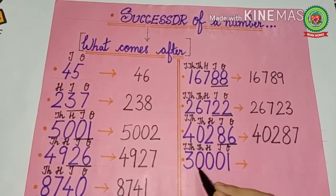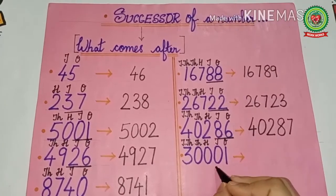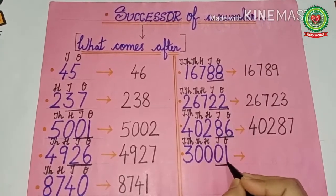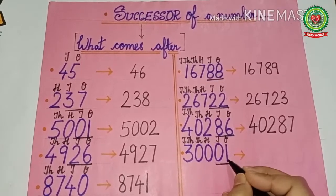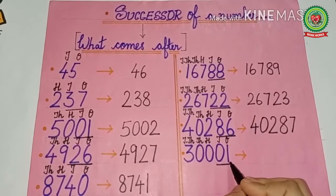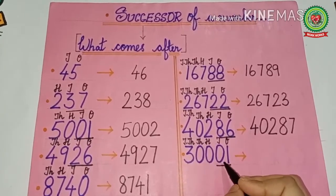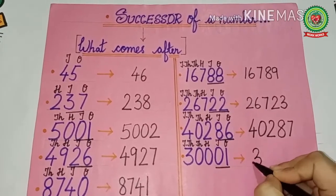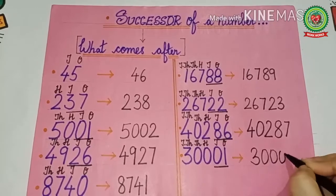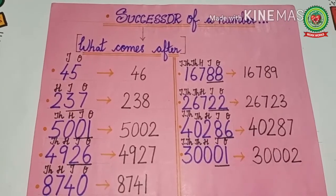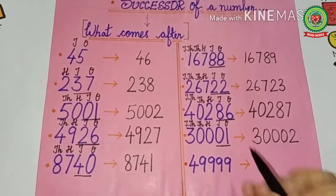Next number: 30001. It is again very simple. Look at the ones and tens — that is 01, which means one. What comes after one? Two. So all the other place values remain the same, and the successor of 30001 is 30002.